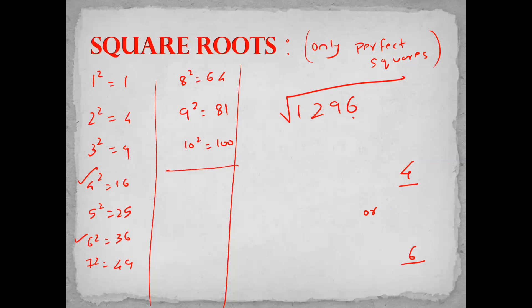Next step: we will cover two digits from the right-hand side, making pairs of 2 digits. So 96 is covered, and I have 12. Square root of 12 — 12 lies between the squares of 3 and 4. It is clearly less than 4², so it is not equal to 4. The answer has to be 3. So my answer would be either 34 or 36.